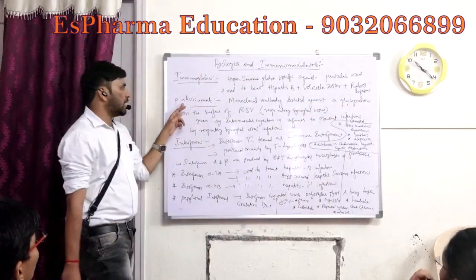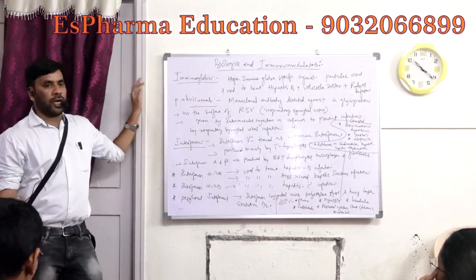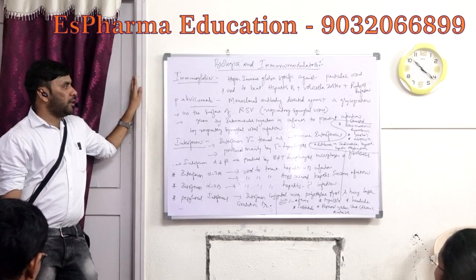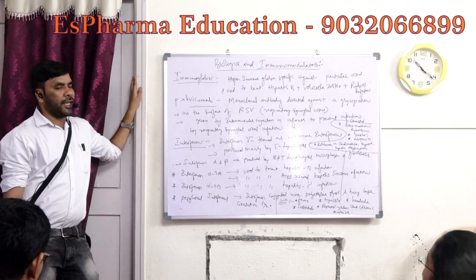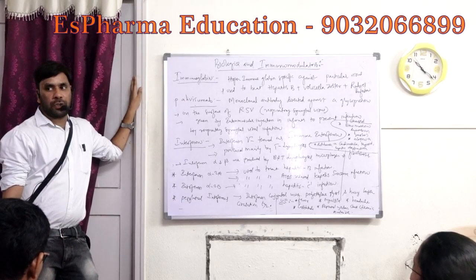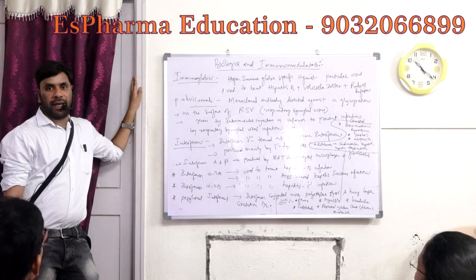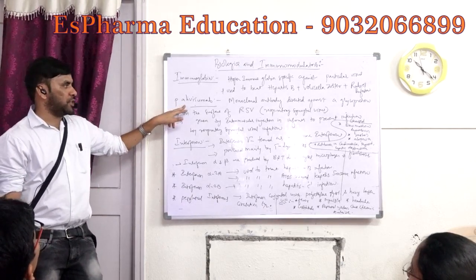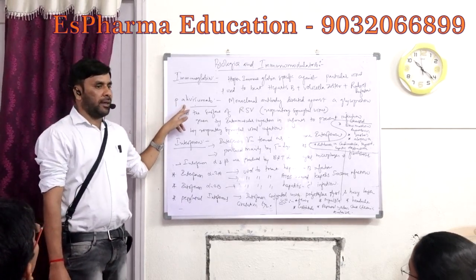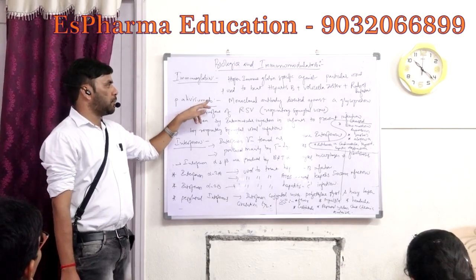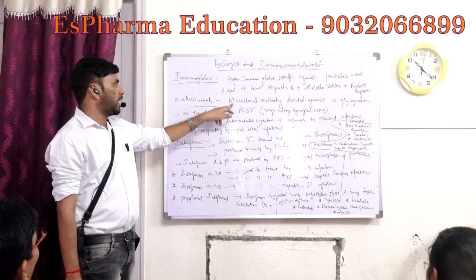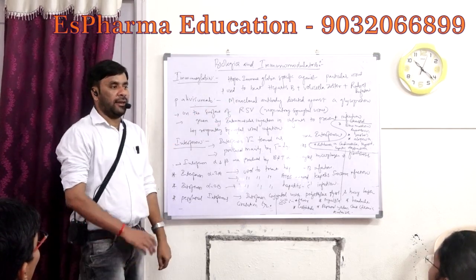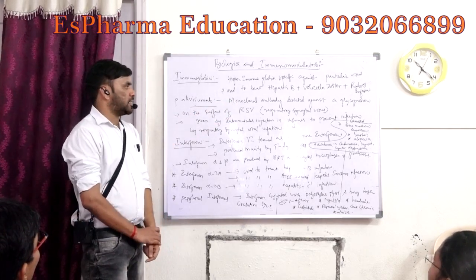Next is monoclonal antibody. Name the monoclonal antibody which is used to treat the viral infection. The answer is Palivizumab. Palivizumab is the monoclonal antibody that is used to treat viral infections.